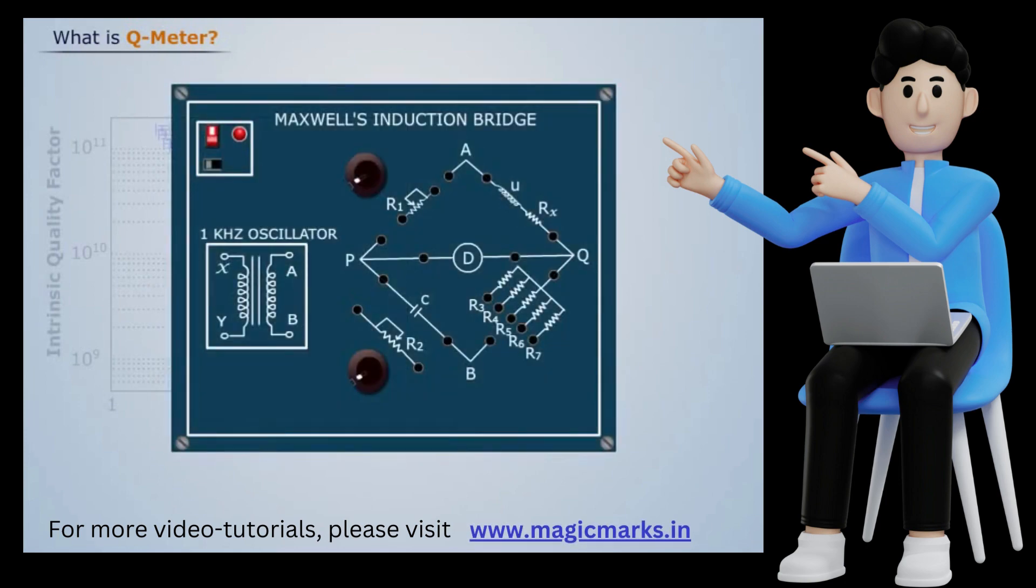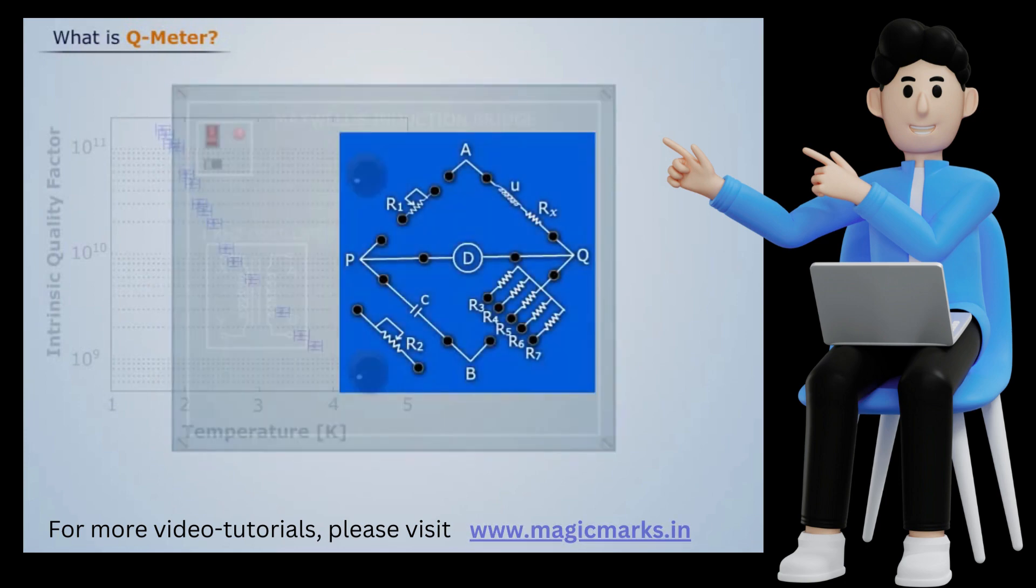Now for measurement of this Q factor, one possible way is by using the inductance bridge, but such bridge circuits are really capable of giving accurate measurements when Q is high.